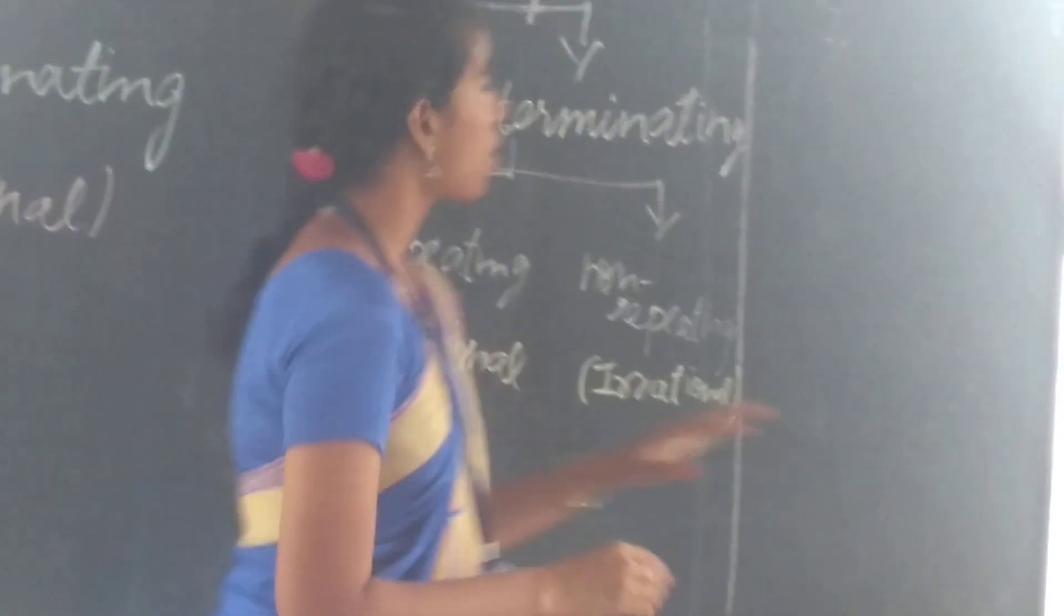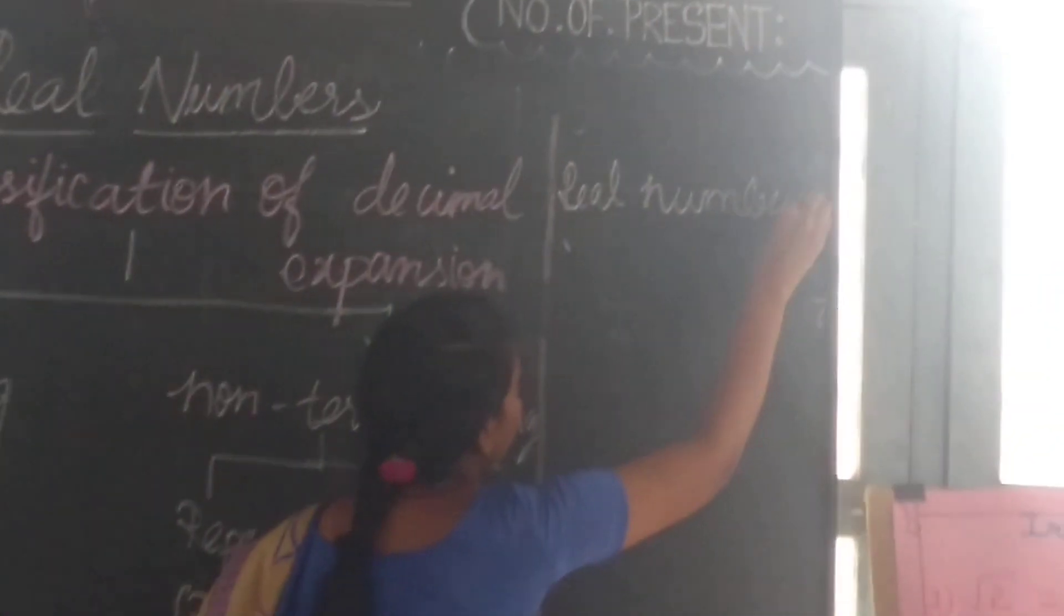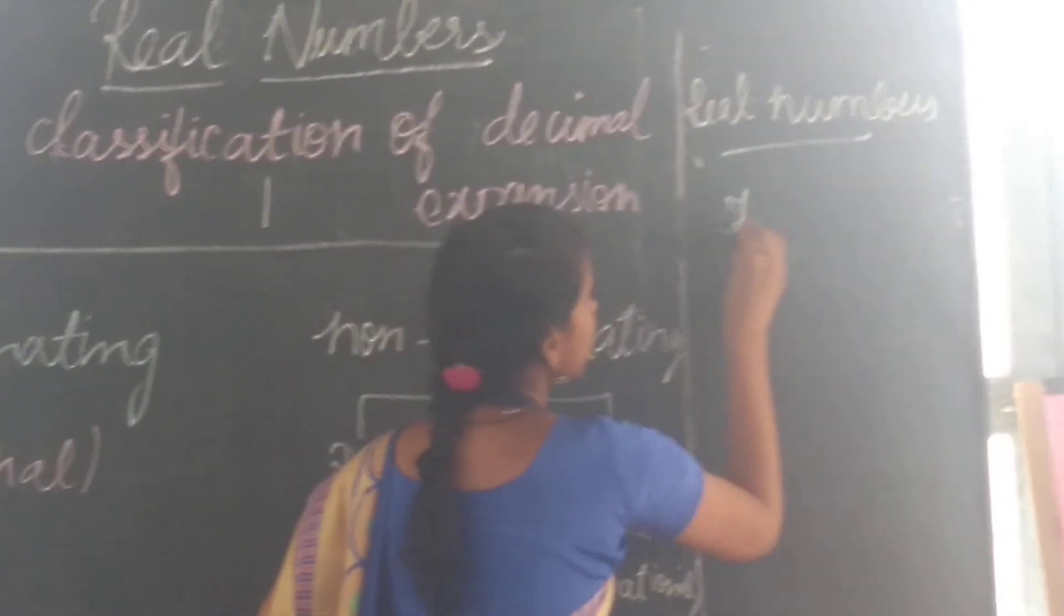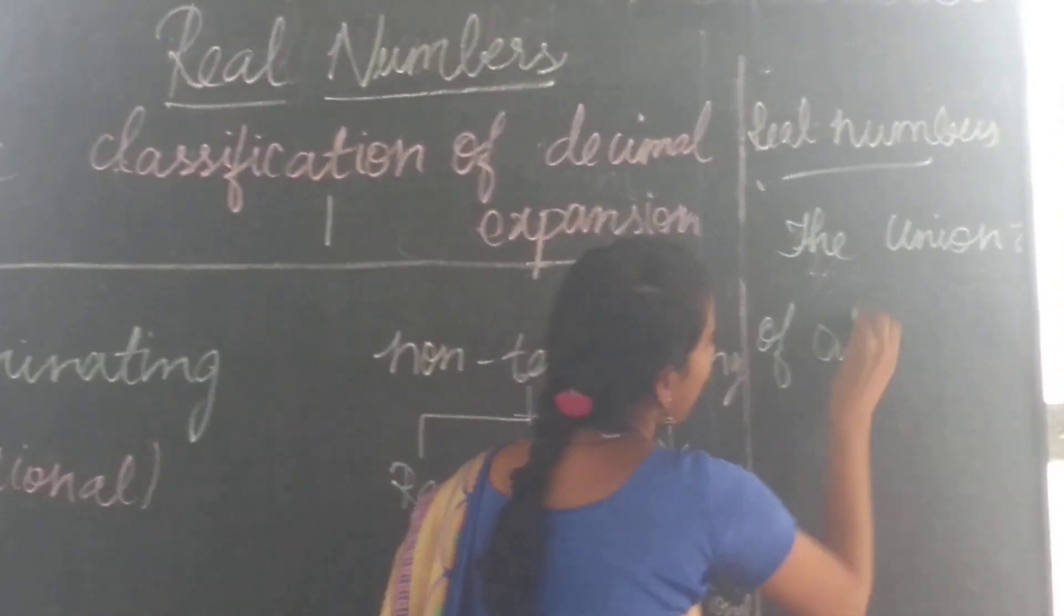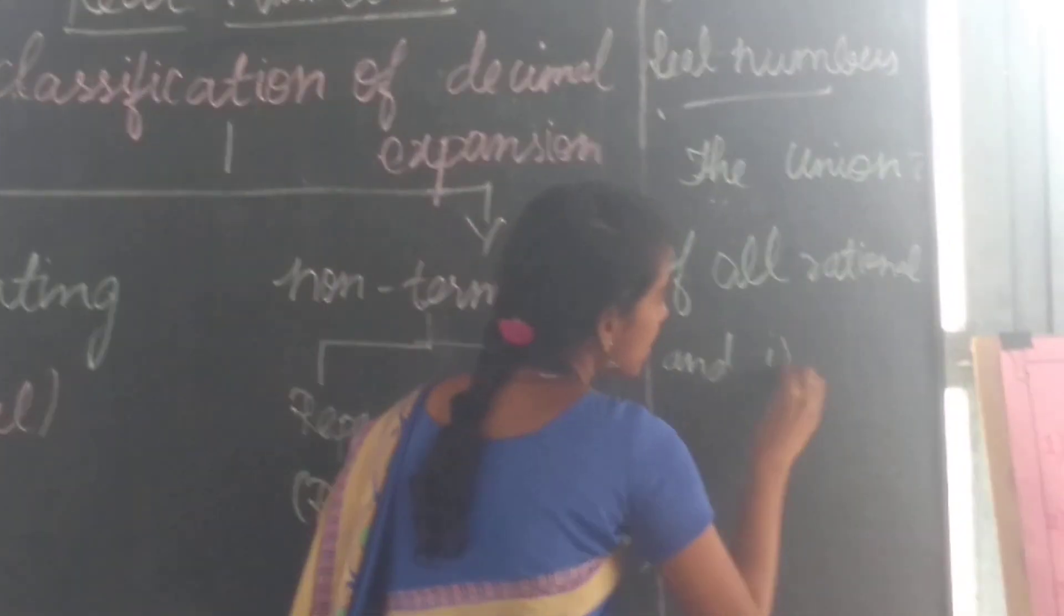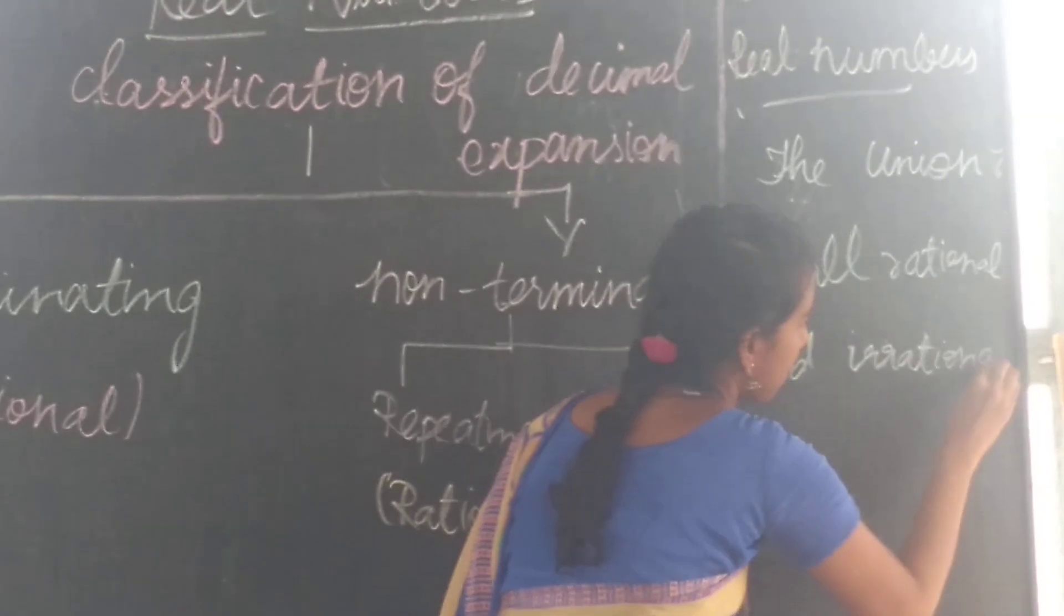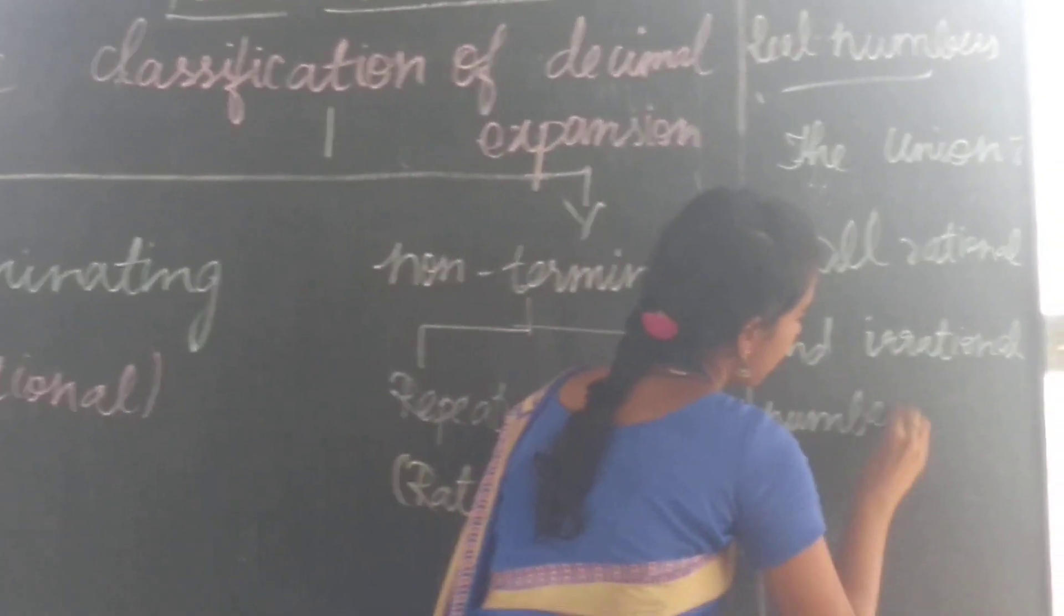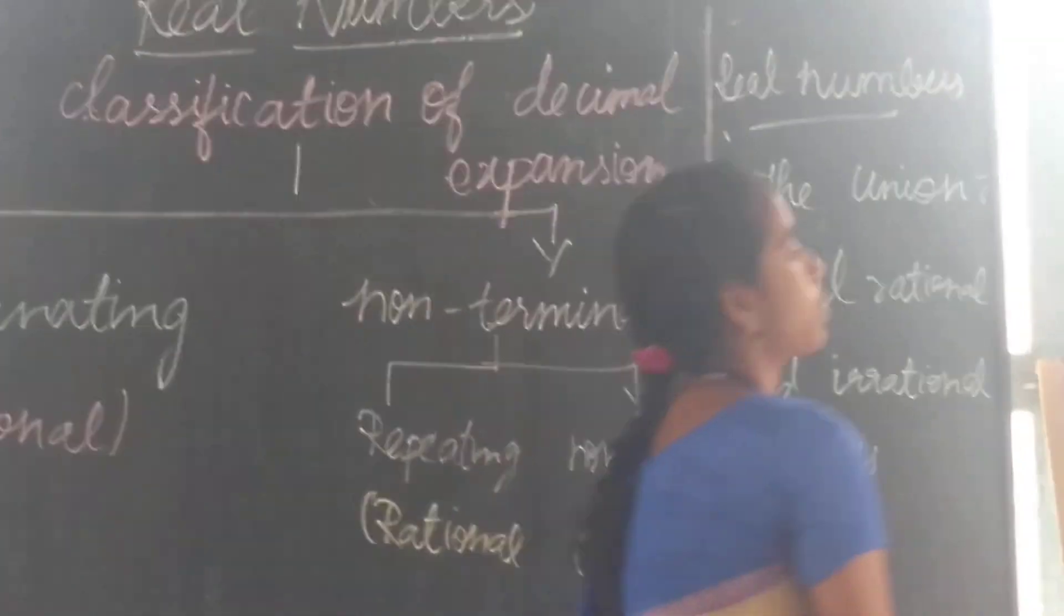See, the union of all rational and irrational numbers is known as real numbers. The union of rational numbers and irrational numbers is known as real numbers and it is noted by the symbol R. Now we will see the next point.